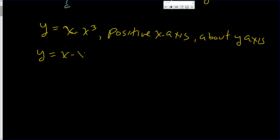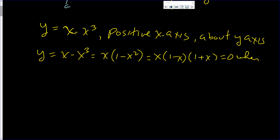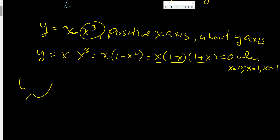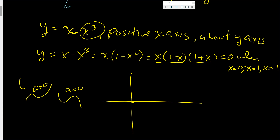Let's find the zeros of this function. I can factor out an x, and then what's in the brackets is a difference of squares, so I can factor that. This equals zero when x = 0, x = 1, and x = −1. It is a negative x-cube, so the cubic crosses at zero, one, and negative one.